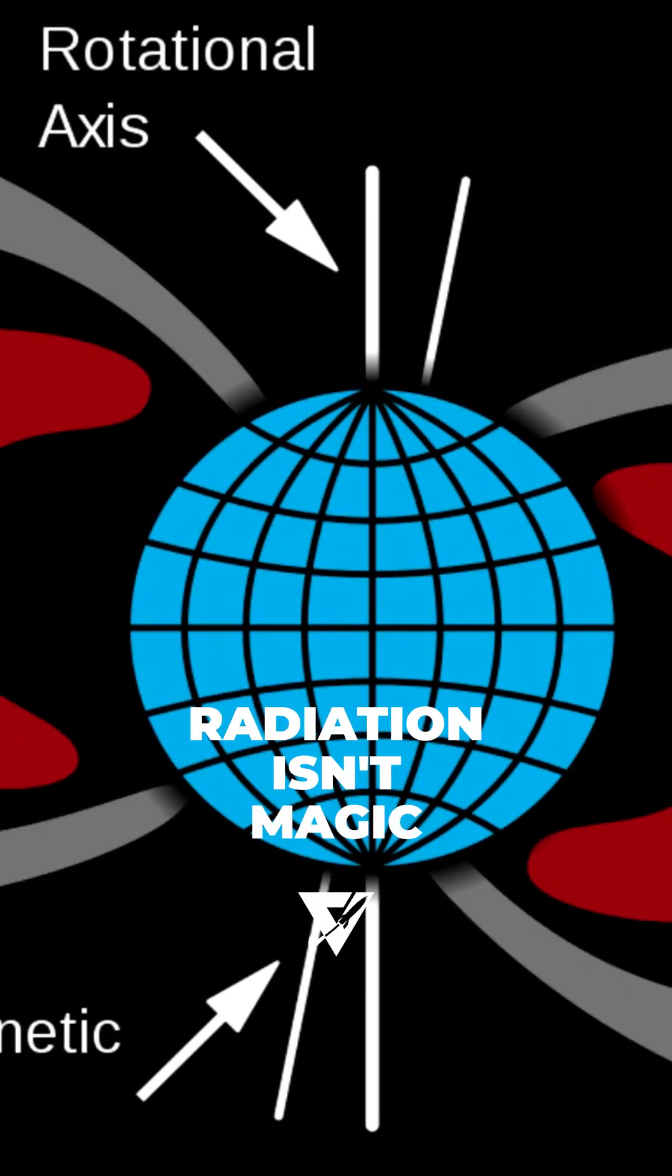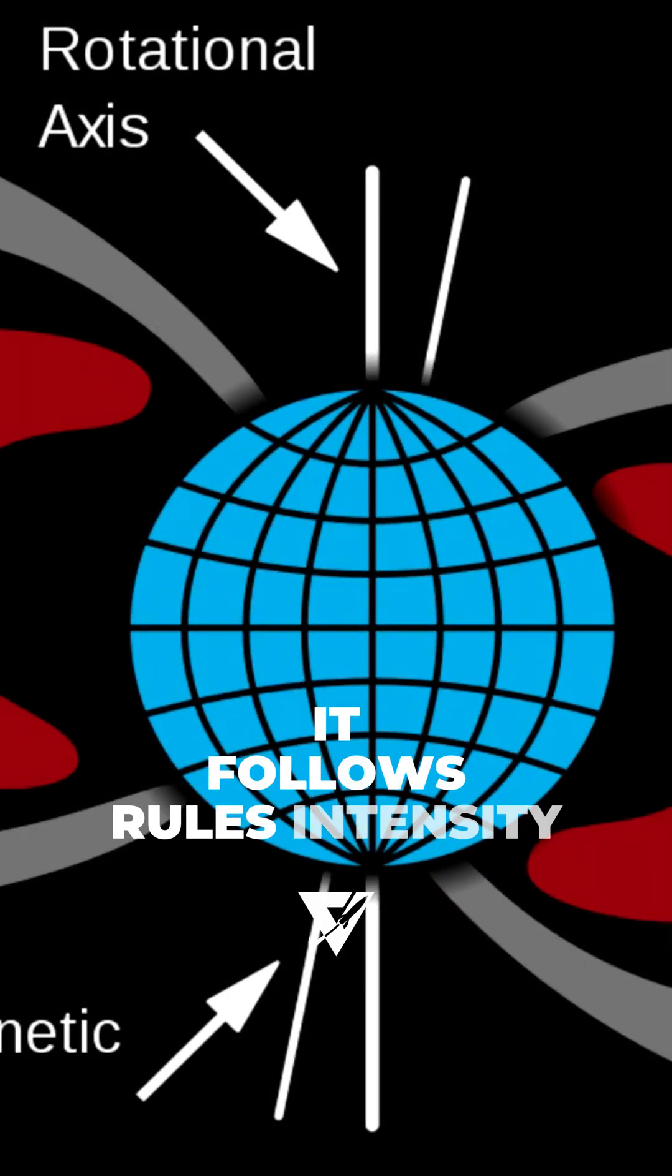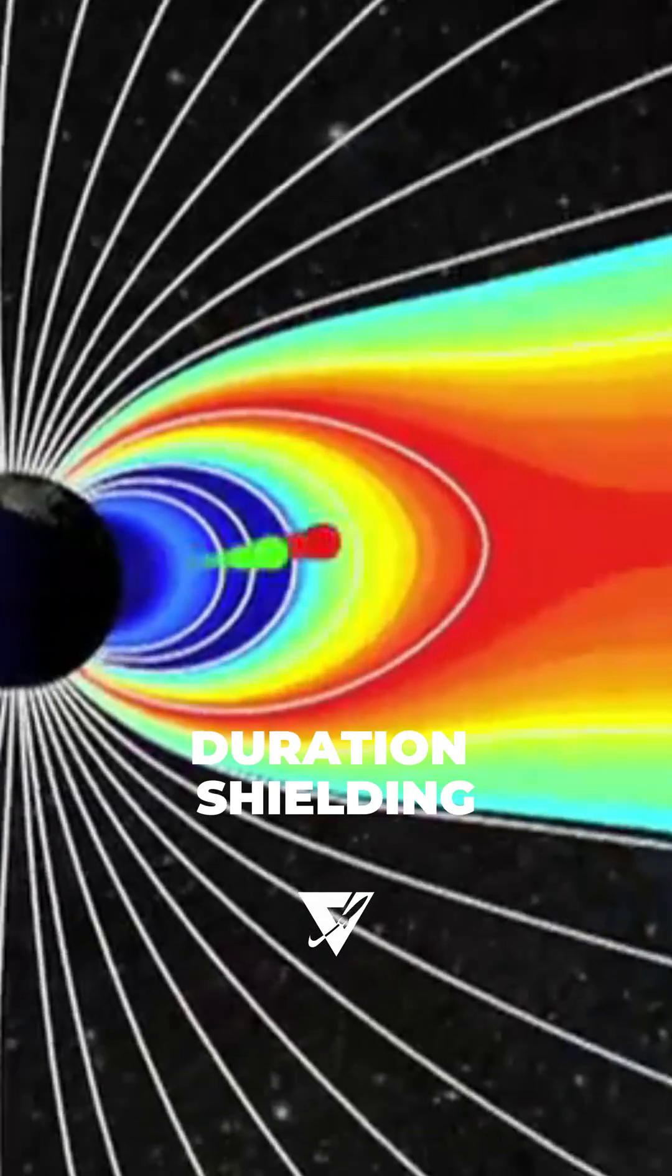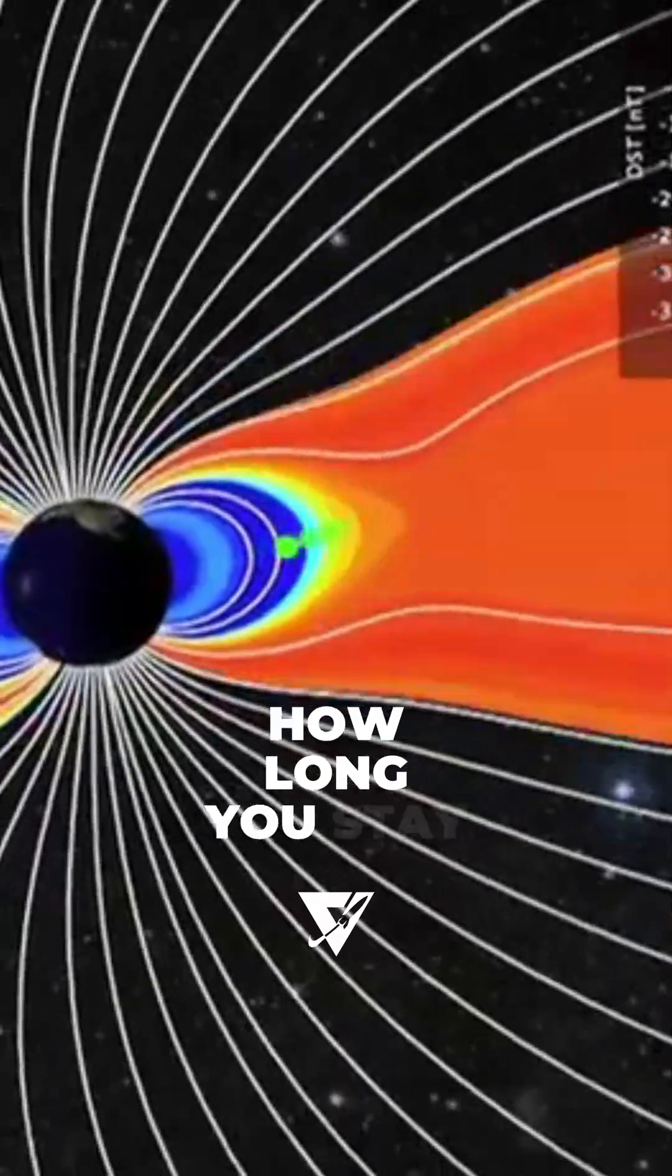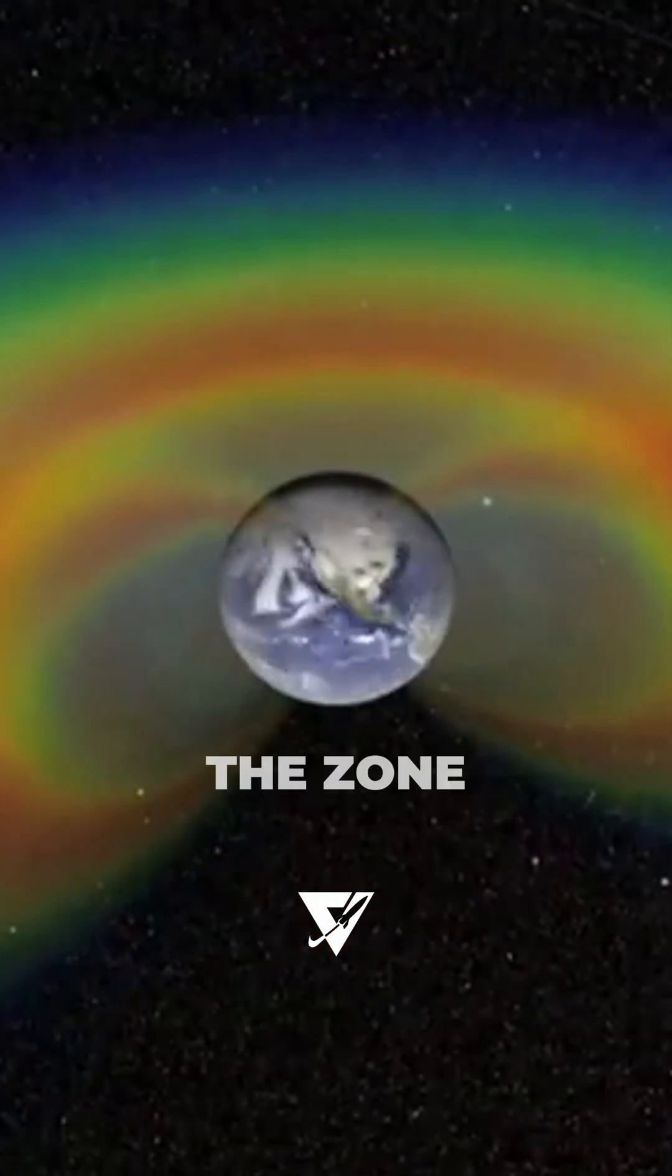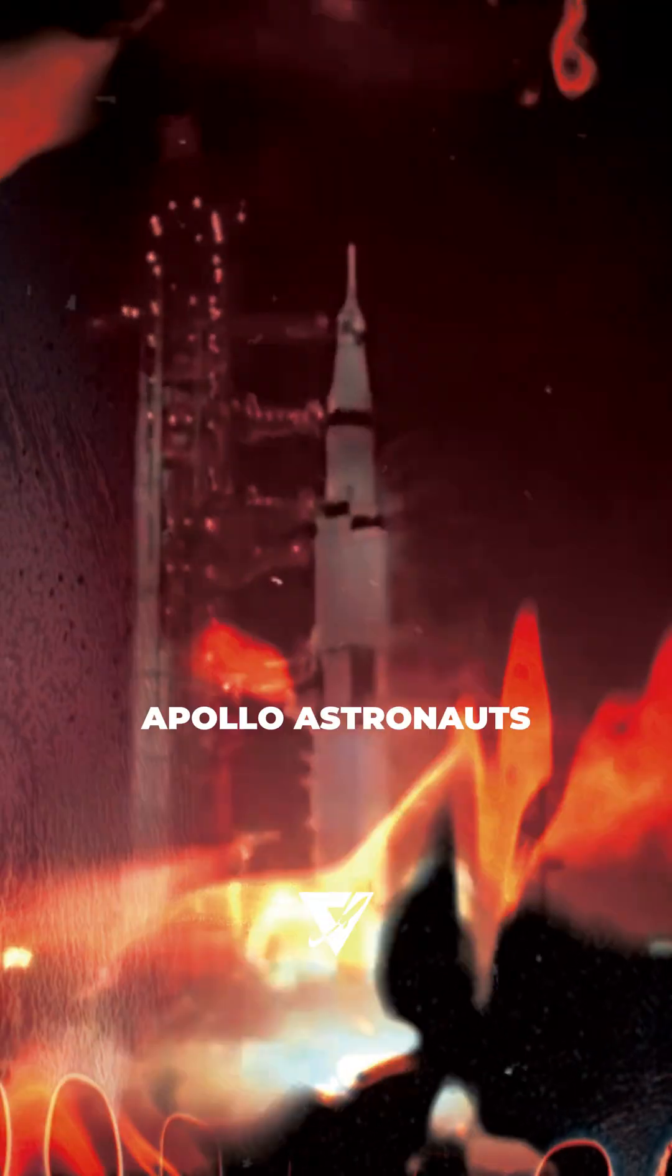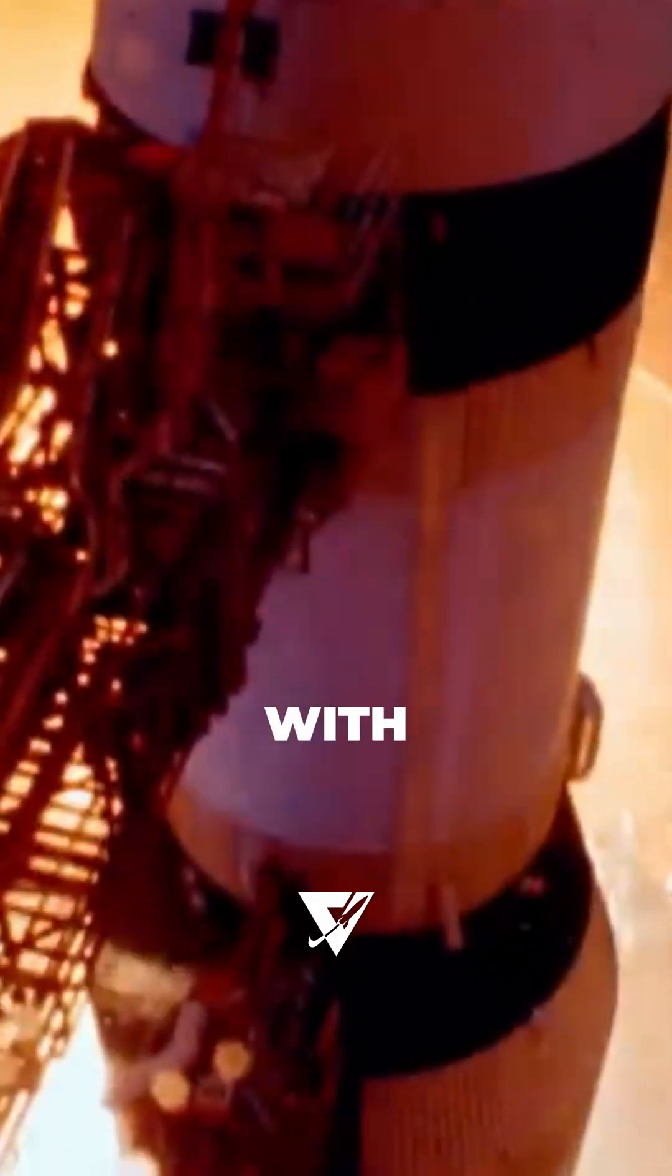Radiation isn't magic. It follows rules: intensity, duration, shielding. The danger comes from how long you stay, not simply crossing the zone. Apollo astronauts passed through the belts in about an hour, with only minutes in the most intense regions.